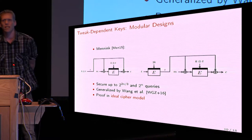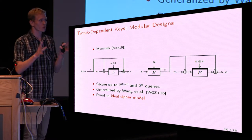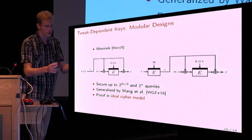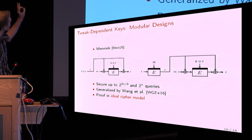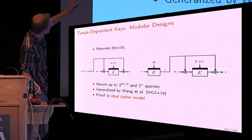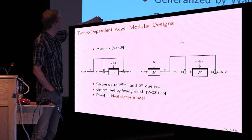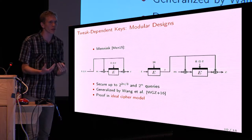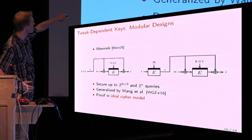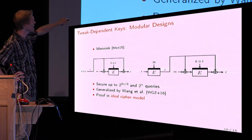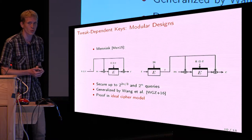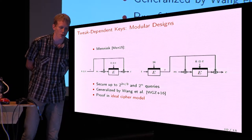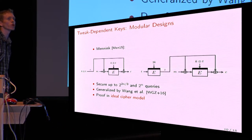Two years ago, we introduced two other schemes with a different incentive: the goal was to design a block cipher-based scheme using just a single key — not two keys, not a key in the universal hash function. The idea is that the key and the tweak get XORed to form the key input to the block cipher, and the message is then encrypted using this block cipher, masked with some value z also derived from an encryption. The masking and the key input are both a function of the key and the tweak. We proved this scheme achieves security up to 2^n — optimal security — very efficiently with only two block cipher calls. Wang et al. then generalized it and found other optimally secure constructions.